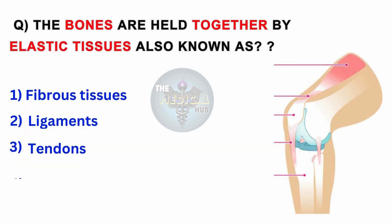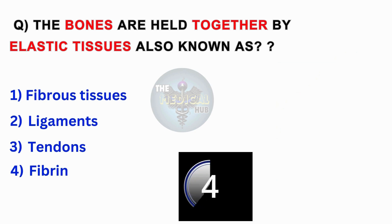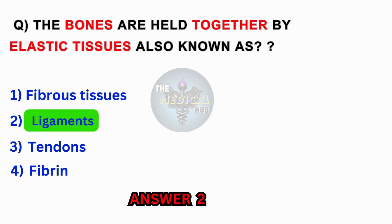The bones are held together by elastic tissues, also known as? Fibrous tissues, ligaments, tendons, fibrin. Answer 2: Ligaments.